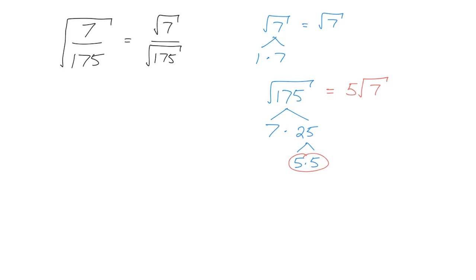Now I plug those values in. On the top, square root of 7 couldn't be simplified. On the bottom, square root of 175 is 5 times the square root of 7. We cancel the square root of 7 on top and bottom — they divide to give you 1. So you have a 1 on the top and a 5 on the bottom, and the final answer is 1 fifth.